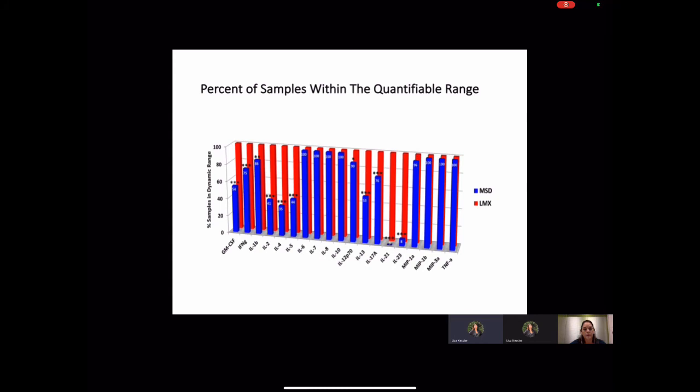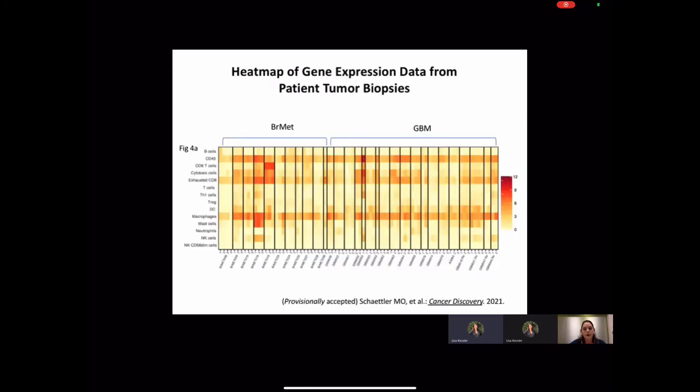We also have insight into which factors might be important because we did whole exome sequencing of the tumor biopsies of all of our study patients. This heat map illustrates that we found signatures of activated T cells and exhausted T cells, signatures of macrophages and signatures of NK cells present in both the tumors of brain metastasis and tumors of glioblastoma patients.